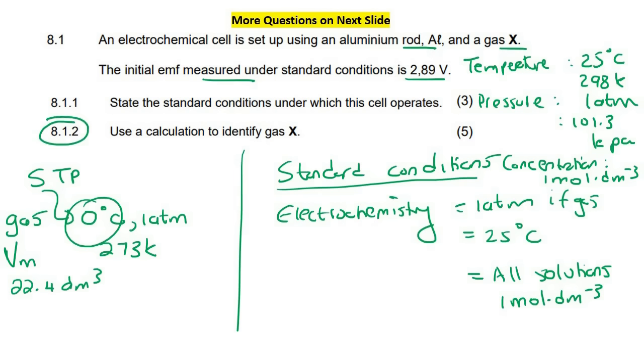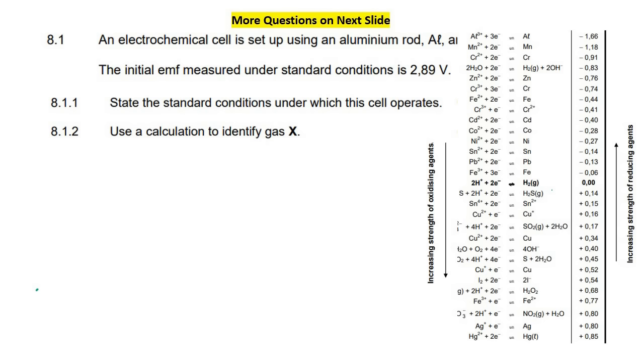Now this question says, use a calculation to identify gas X. Okay, so we obviously need to go get our table. Now, I did have to cut off this little piece here, but it just says aluminum and a gas. Okay, so the point is that we have aluminum. Now, that is pure aluminum. That's not aluminum three plus. That is aluminum. So we're going to go circle that over there.